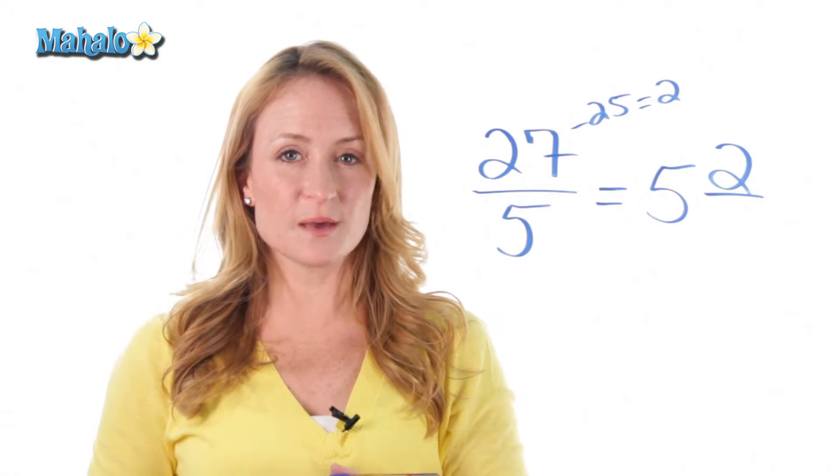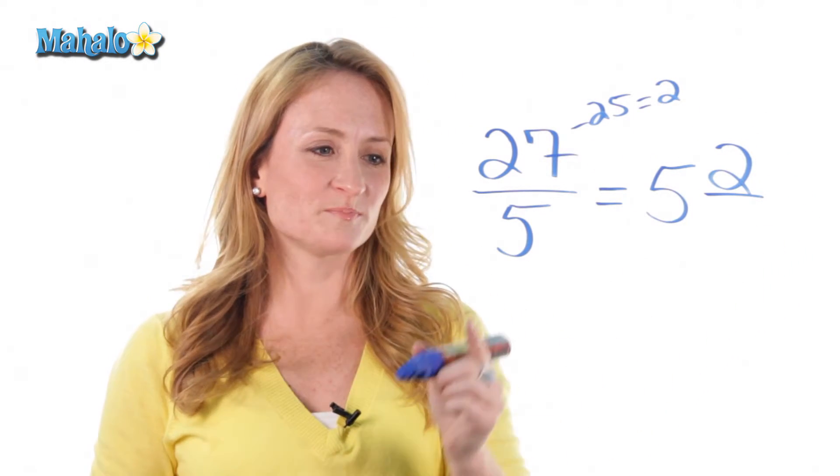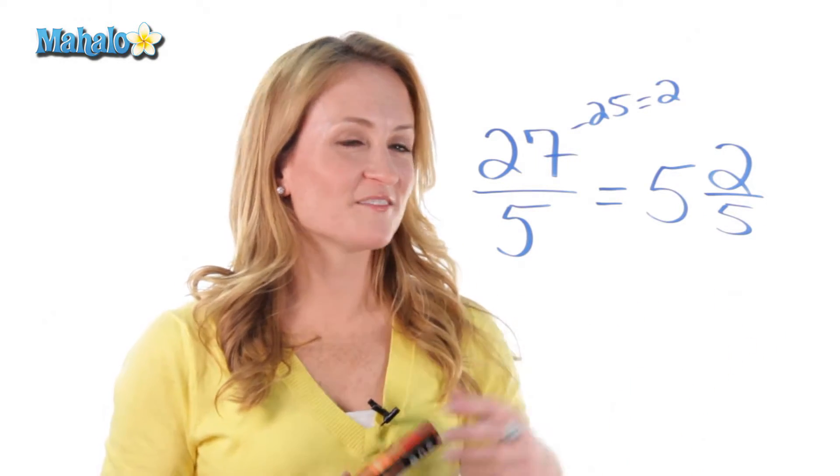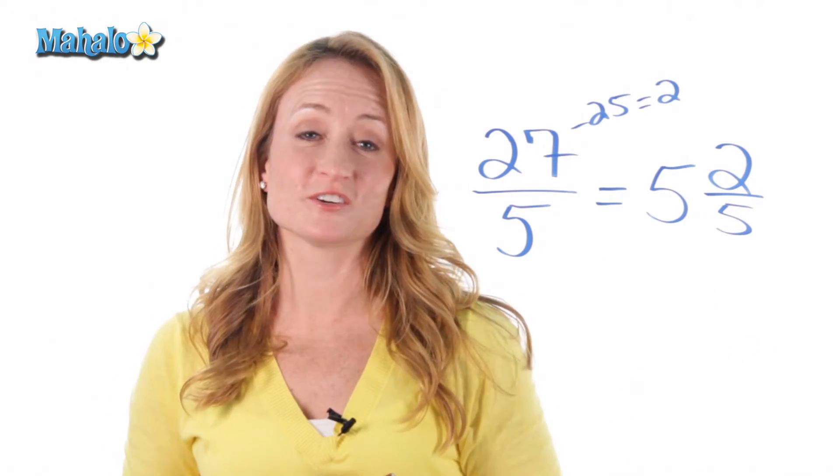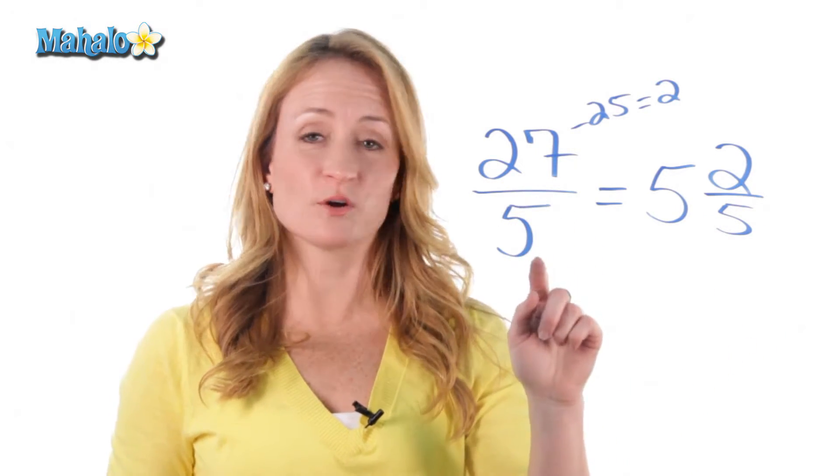Now, do we have a new denominator? Nope — the denominator stays the same. So there you have it: we just turned 27 over 5 into 5 and 2 fifths. And that's how you convert a fraction into a mixed number.